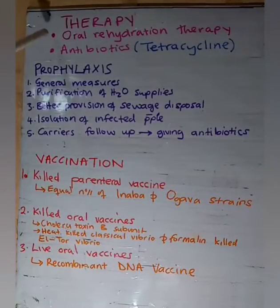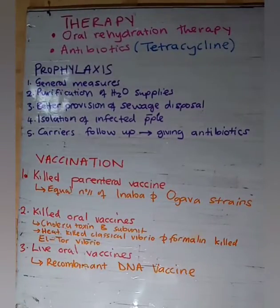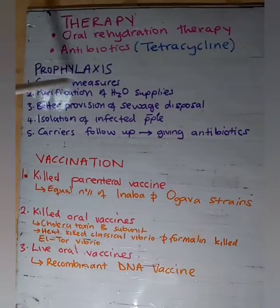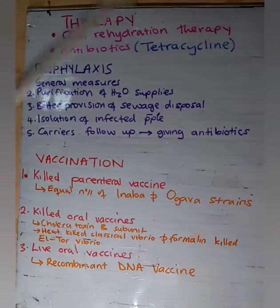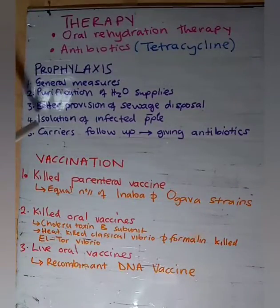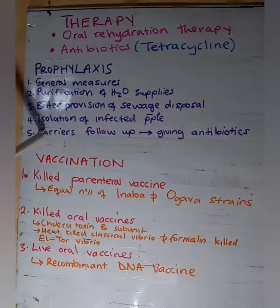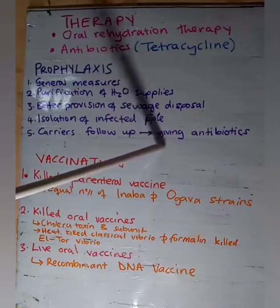For therapy, oral rehydration therapy can be given to an infected person, along with antibiotics such as tetracycline. For prophylaxis, general hygiene measures include purification of water supplies, better sewage disposal, isolation of infected individuals, and follow-up of carriers who should be given antibiotics.